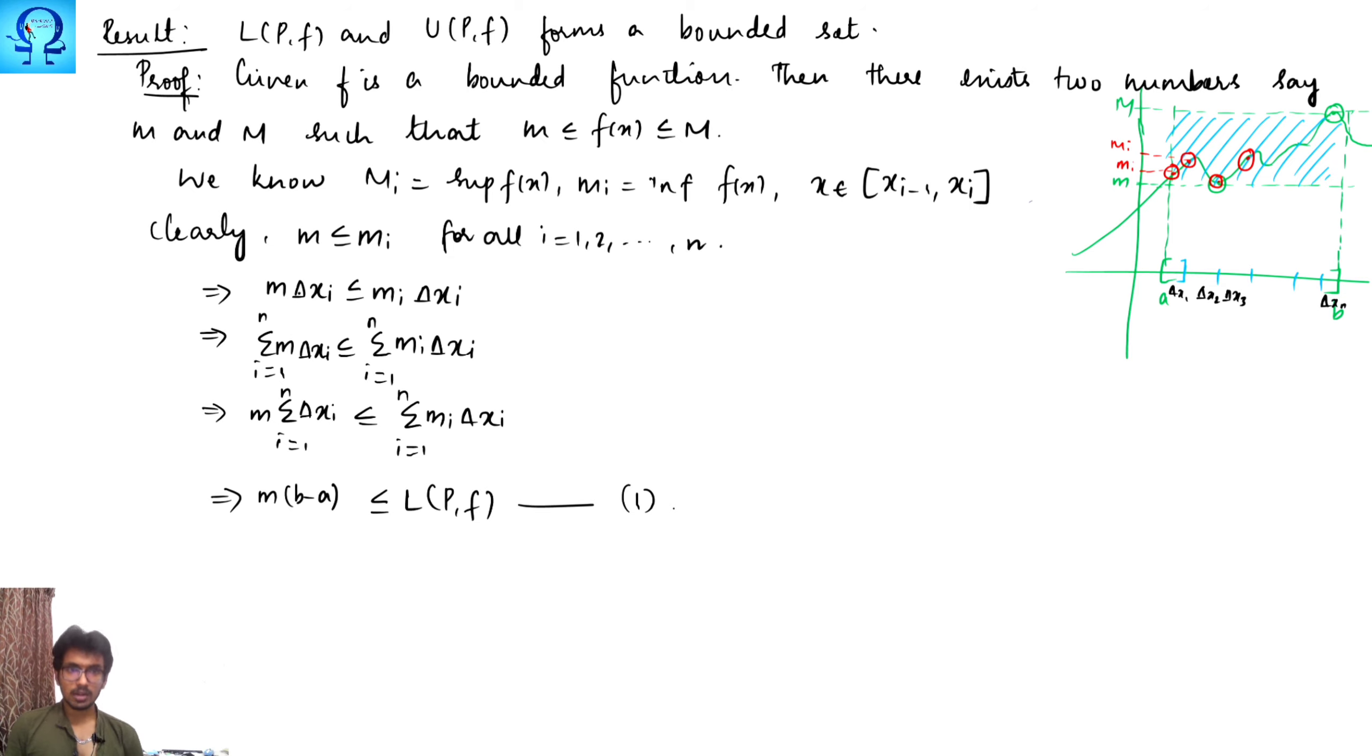Now we are going to proceed with the same kind of arguments. Consider big Mi is smaller than or equals M. This tells me the same arguments: Mi delta xi less than or equals M times delta xi. Next I am going to take the summation i runs from 1 to n: summation Mi delta xi less than or equals summation M delta xi. And this is my UPF, and this is M times b minus a. Let us mark this as equation 2.